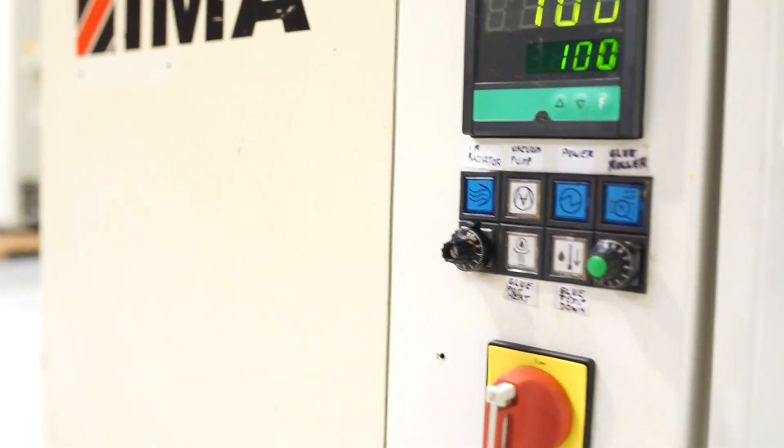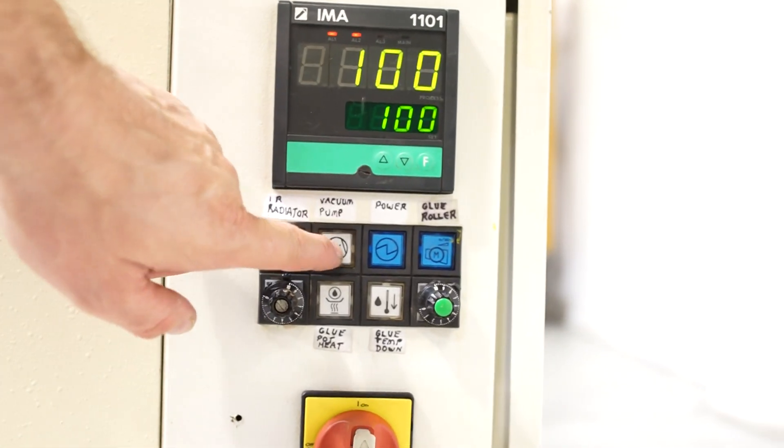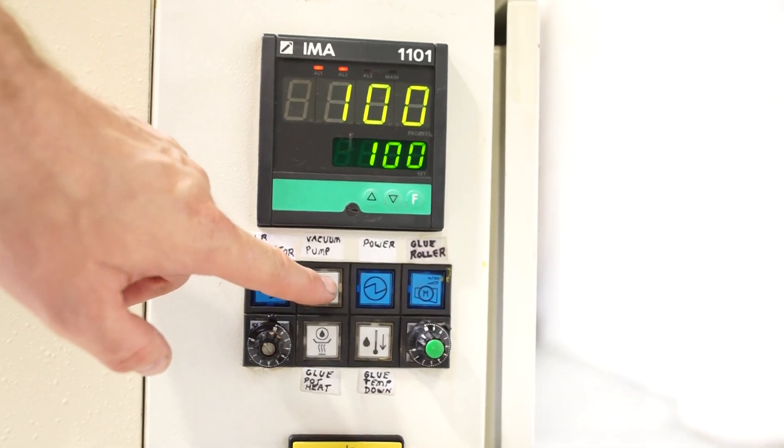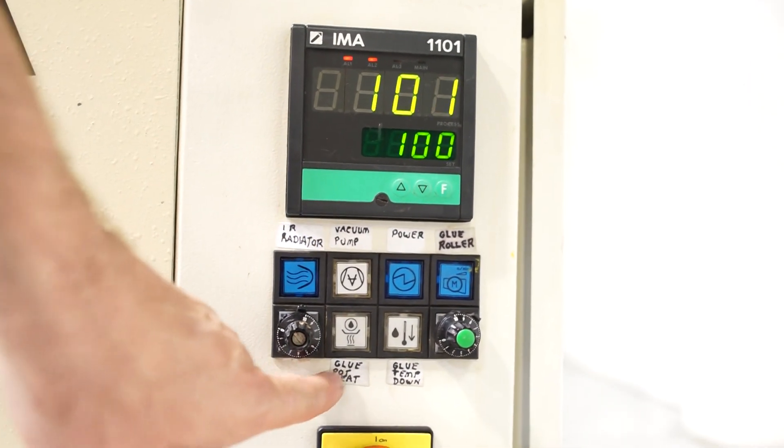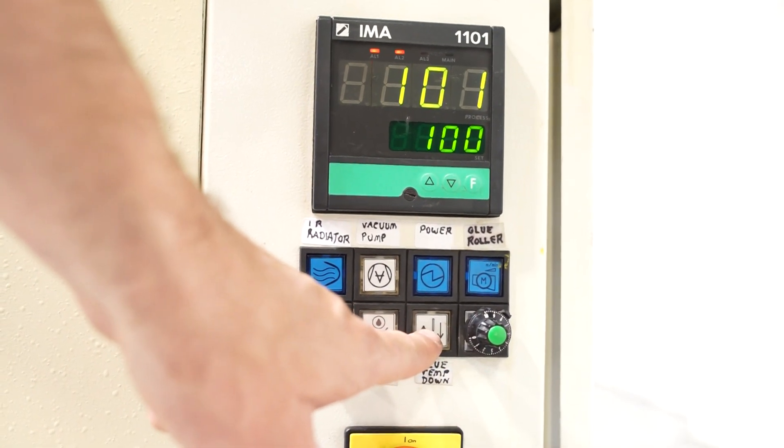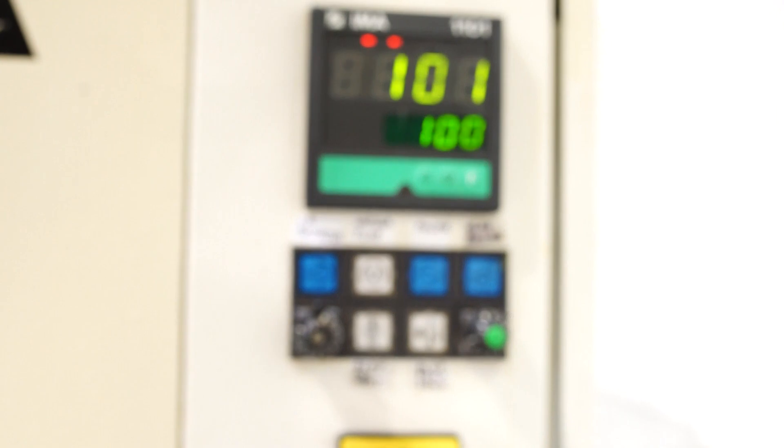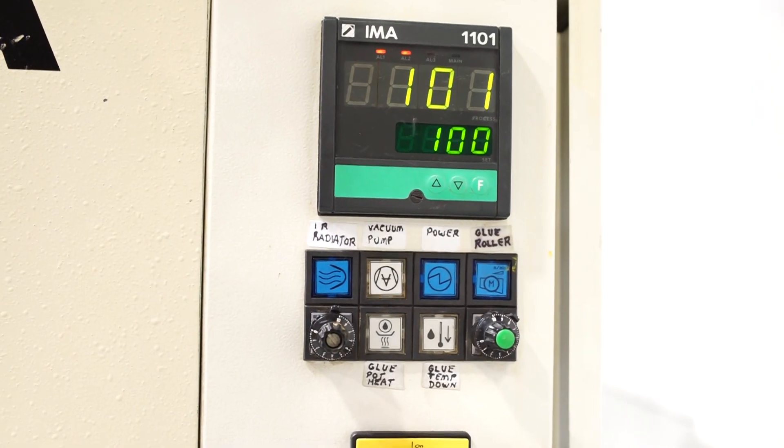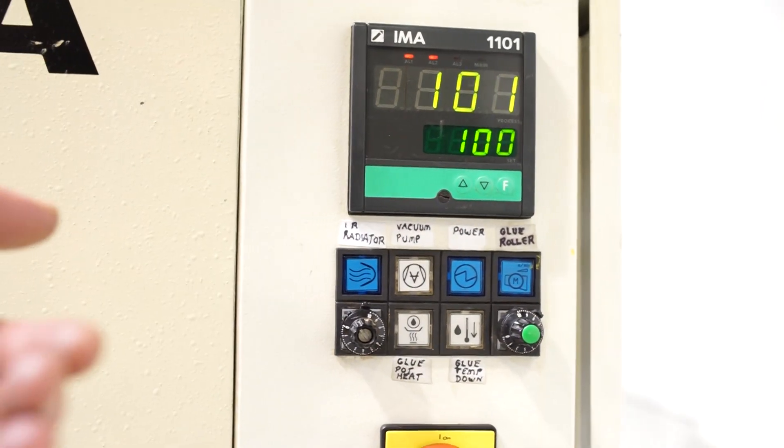That slow speed is controlled off the front panel right here. You can also turn your vacuum pump on or off. You have your glue pot heat up, glued down temperature. This is to stop it from dripping when you turn it off. Obviously if you were just to turn it off abruptly that glue pot is just going to empty. It's going to slowly bring that temperature down.